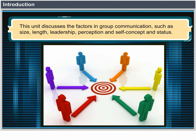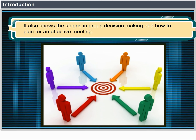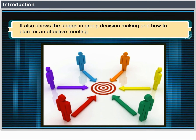This unit will discuss the factors in group communication such as size, longevity, leadership, perception and self-concept, and status. It also shows the stages in group decision-making and how to plan for an effective meeting.